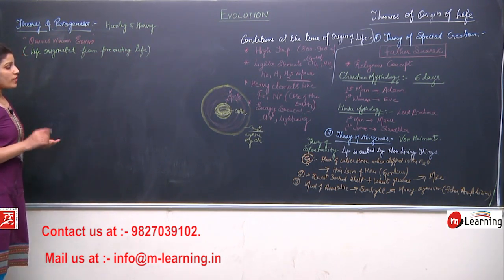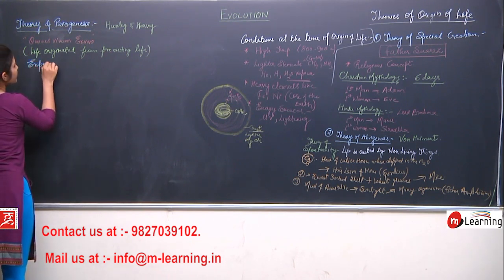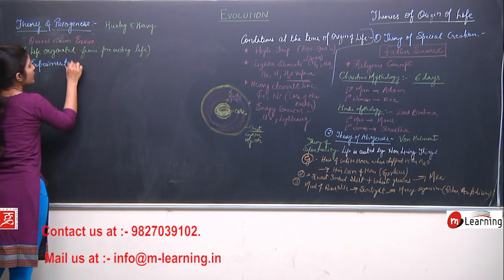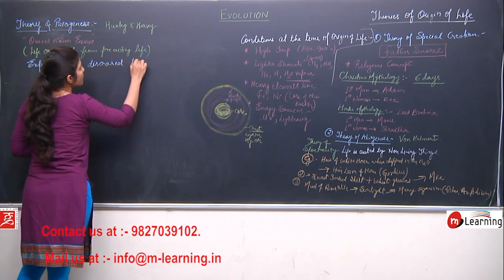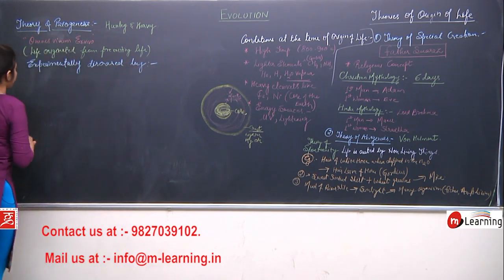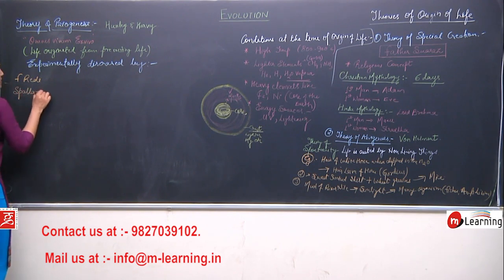The theory of abiogenesis was experimentally discarded by three scientists: Francisco Redi, Spallanzani, and Louis Pasteur. These three scientists experimentally discarded the theory of abiogenesis.